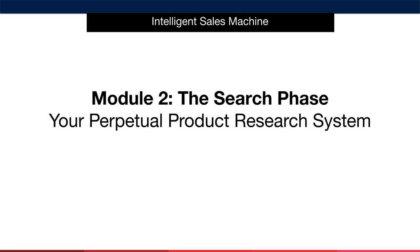Welcome to Module 2 of the Intelligent Sales Machine Program. In this module, we're going to introduce you to the first part of your perpetual product research system that we talked about in Module 1. We're going to dive deep into the 4S product process, beginning with the search phase.